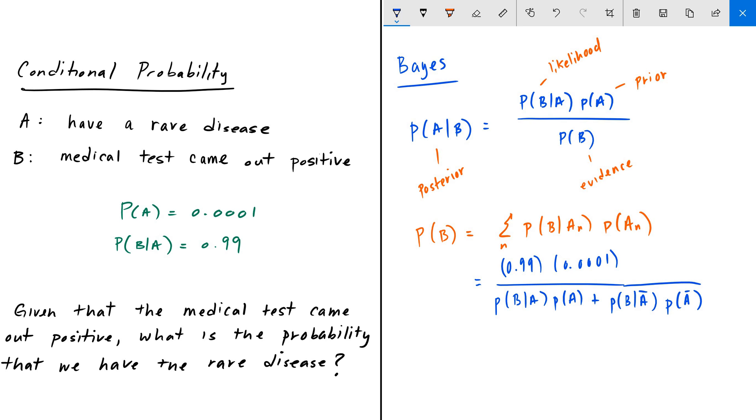The probability of B given A is 0.99. The probability of A is also given, 0.0001. And then, the probability of B given not A is going to be 1 minus the probability of B given A, so this one will be 0.01. And this last one here, the probability of not A, is equal to 1 minus the probability of A, which will be 0.9999.